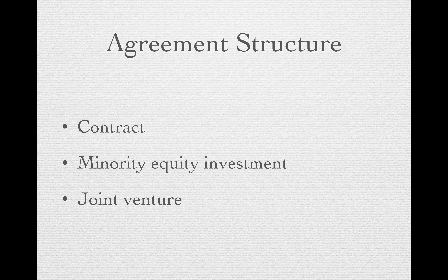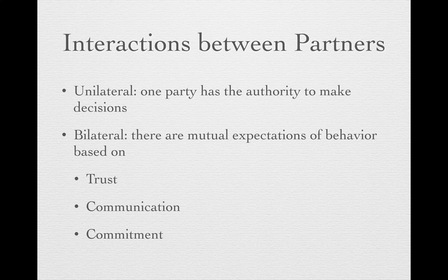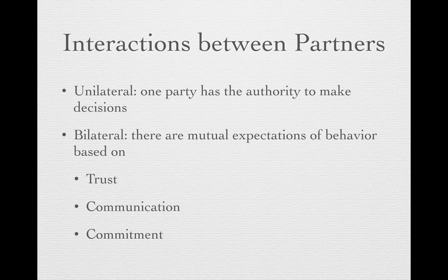There are two styles of managing interactions between partners. Unilateral is where it's obvious to everyone that one party is more powerful and has the authority to make decisions. Dell is notoriously feared by its suppliers because it is unilateral — it simply asks for lower prices every year. Bilateral is where there are mutual expectations of behavior based on trust, communication, and commitment. When there is a lot of environmental uncertainty and the scope of work is complex, bilateral interactions may be better than unilateral interactions.